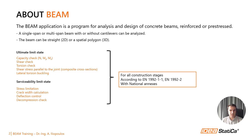The BEAM application can be used to examine both the ultimate limit state and the serviceability limit state. In terms of ultimate limit state, you can check capacity, bending with normal force, shear check, torsion check, and interaction. You can check shear stress parallel to the joint, which is particularly useful in case of composite cross-sections.